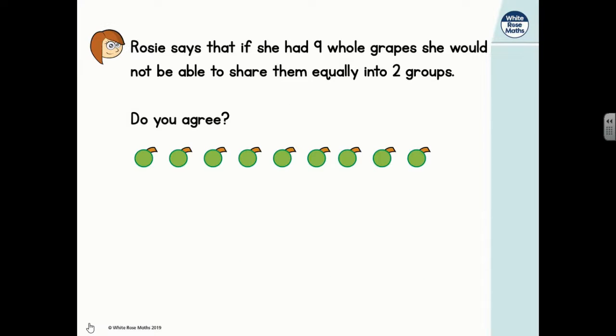Rosie says that if she had nine whole grapes, she would not be able to share them equally into two groups. What do you think? Remember, they don't have to be whole grapes. They can be whole anythings. So if you're doing this at home or at school, then you can get yourself nine somethings and try to share them equally into two groups.